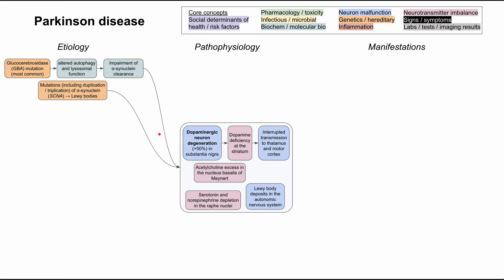Other mutations include mutations in the alpha-synuclein gene itself — the SCNA gene. This leads to an increased number of Lewy bodies, another key finding in Parkinson's disease. You can have duplication or even triplication of the alpha-synuclein gene, and both predispose you to Parkinson's disease.